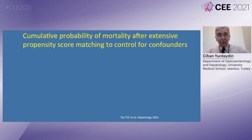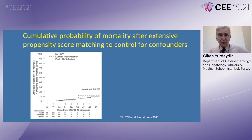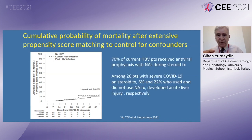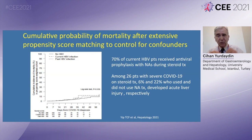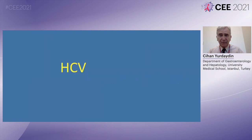This again shows that HBV itself is not the key factor, but we have to be reminded that patients were very well treated for their HBV. The cumulative probability of mortality after extensive propensity score matching showed absolutely no difference in cumulative incidence of mortality between patients with current HBV, past HBV, and without HBV. Seventy percent of current HBV patients received antiviral prophylaxis with nucleos(t)ide analogs during steroid treatment. Among 26 patients with severe COVID-19 on non-steroid treatment, only 6% who used nucleos(t)ide analog antiviral treatment developed acute liver failure, compared to 22% in those who did not — highlighting the importance of antiviral treatment for hepatitis B.